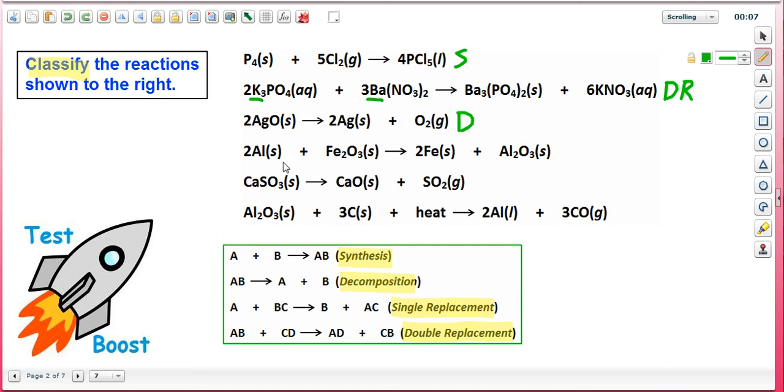In the fourth reaction, notice how the metals are switching their places in the bonding to oxygen to form products. That is an example of a single replacement reaction.